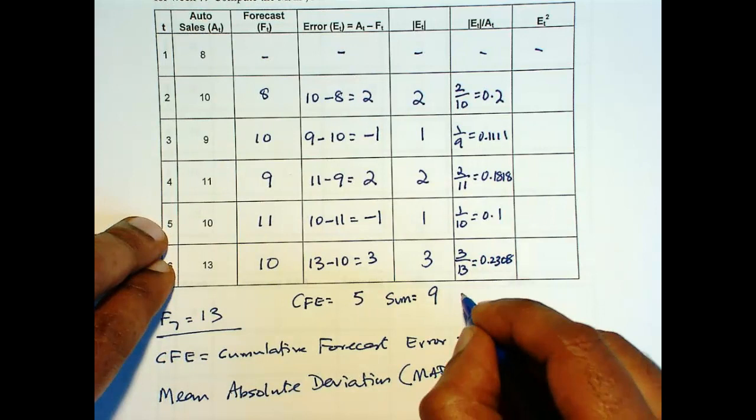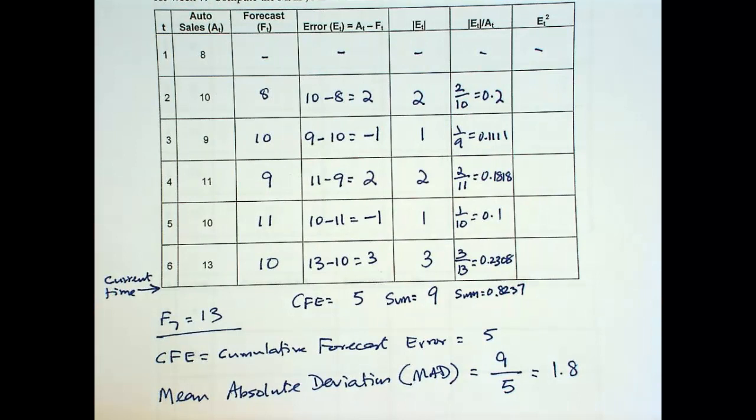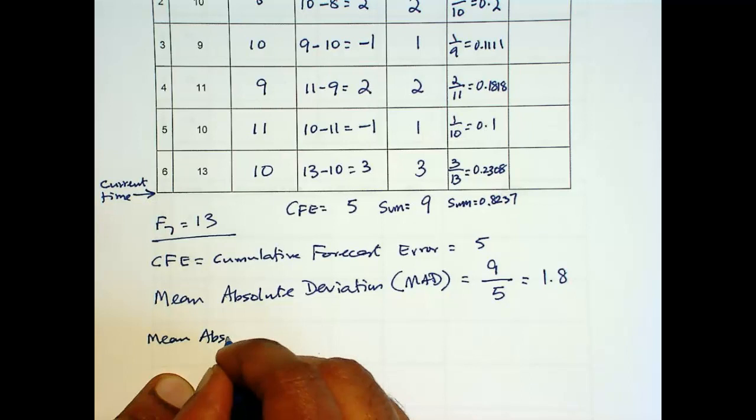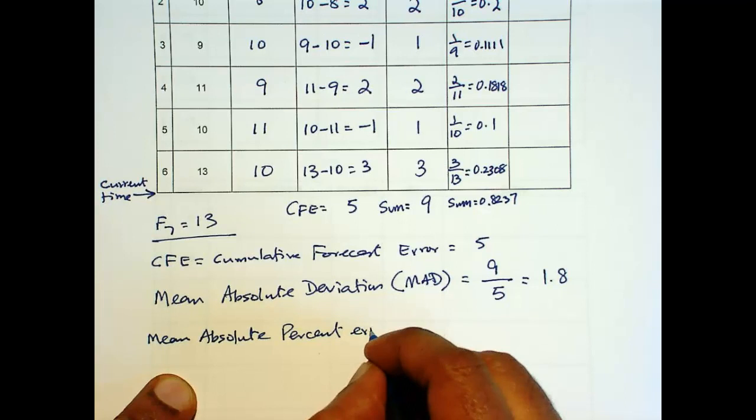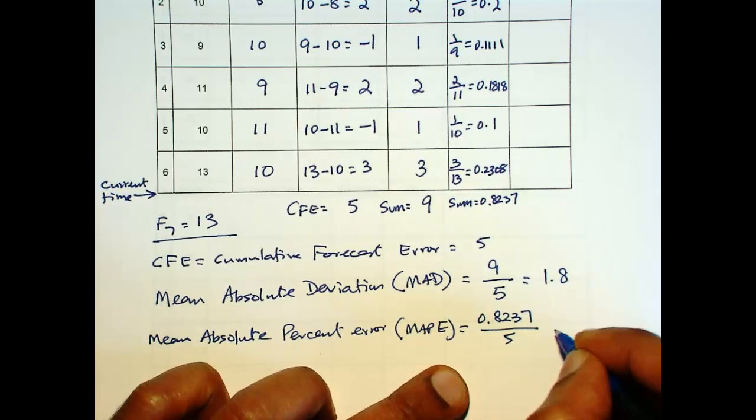So this is mean absolute percent error, MAPE, which is you take the average of this column. So 0.8237 over 5. And then you have to multiply by 100 to convert it into a percentage. So that is 16.47%, the mean absolute percent error.